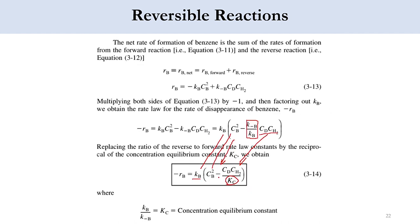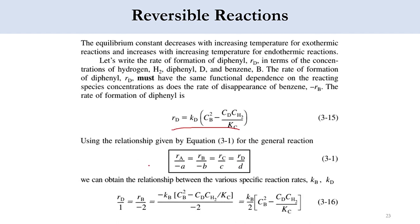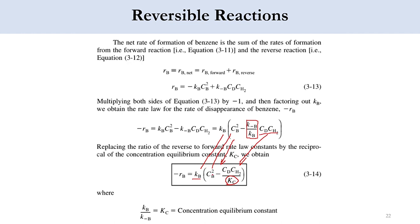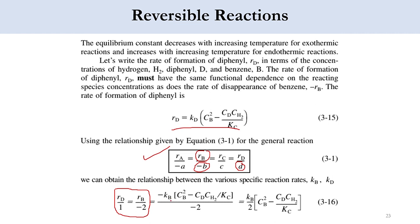What changes is that K_B is replaced by K_D and -R_B is replaced by R_D. Using the relative rate relationship — R_A/(-a) = R_B/(-b) = R_C/c = R_D/d — we can relate R_D and R_B: R_D/1 = R_B/(-2). Substituting R_B = K_B · [C_B² - C_D · C_{H₂} / K_C] gives R_D = (-K_B · [C_B² - C_D · C_{H₂} / K_C]) / (-2) = (K_B/2) · [C_B² - C_D · C_{H₂} / K_C].